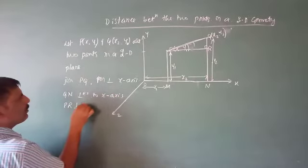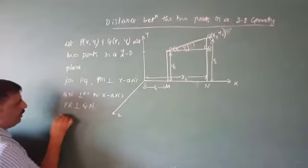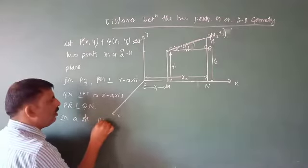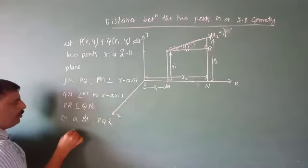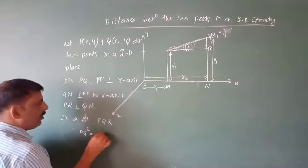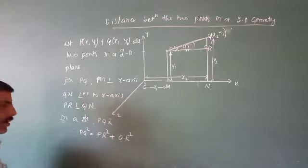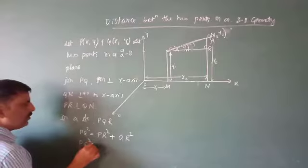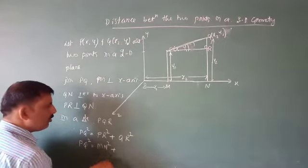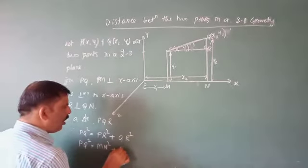PR is perpendicular to QR. By the Pythagorean theorem, PQ² = PR² + QR². PR² is also equal to MN² because these two are parallel and in the same plane. So PQ² = MN² + QR².